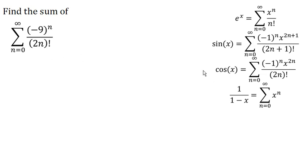So here, because of the 2n factorial, it clues us in that we're probably going to need a cosine. And so now we just need to write the numerator somehow as negative 1 to the n, x to the 2n.